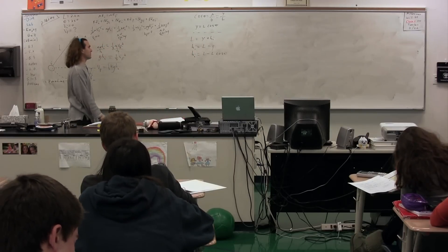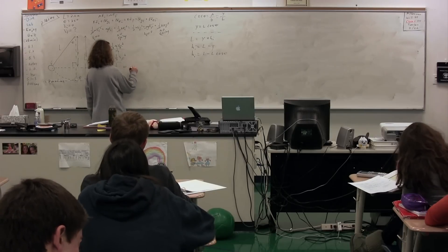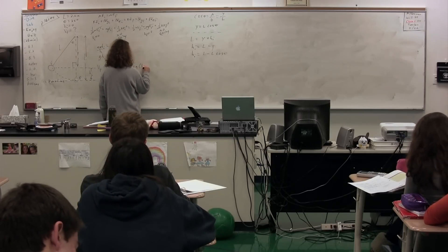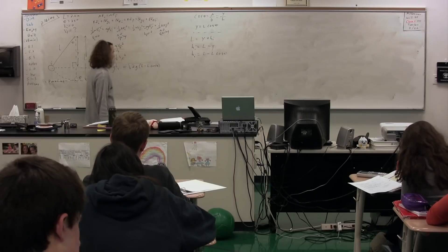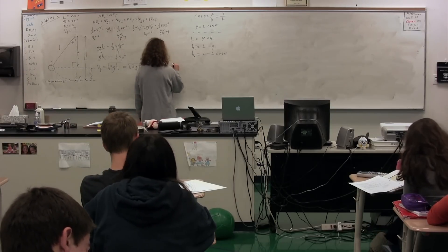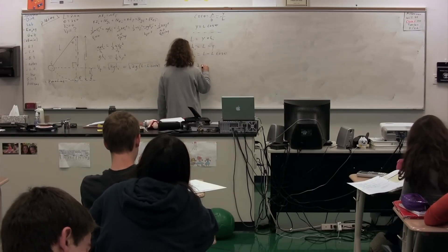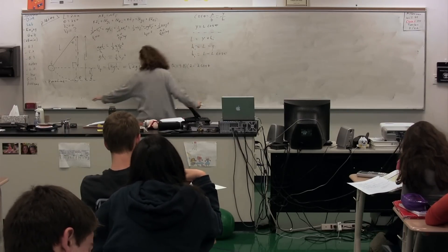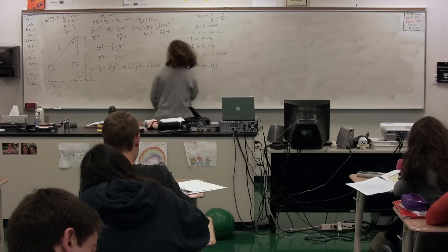Again, we could plug in numbers and figure out the height initial, but we don't need to. We can simply plug that back into our equation over here: 2G times the quantity L minus L cosine theta, where that is parenthetically placed. And we get that equation right there. So we get 2 times 9.8 times the quantity 2 minus 2 cosine of 25 degrees.